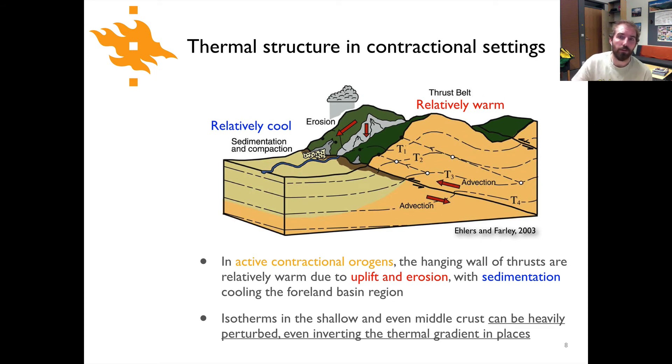Here's the case of the same thing in a contractional setting or a convergent setting. Here we have a thrust fault, a shallow angle thrust fault, thrusting material out over the top of a sedimentary basin. The basin has relatively cool material being deposited as a result of erosion of the mountain range. We have uplift of relatively warm material toward the surface and erosion. In this case, when you go to mid-crustal depth or a little bit deeper, you can actually see isotherms that will begin to fold over on themselves as you have really warm hanging wall compared to a relatively cool footwall.